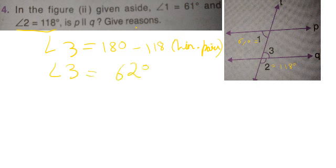So you write here in the answer that angle 1 is 61 degrees and angle 3 is 62 degrees. This means what?